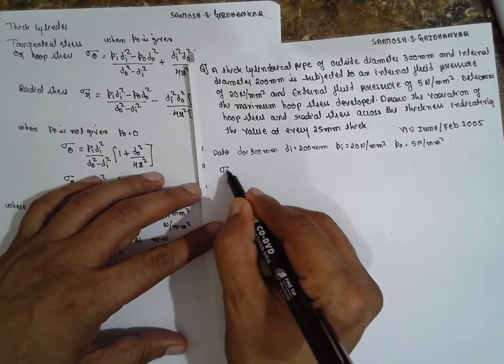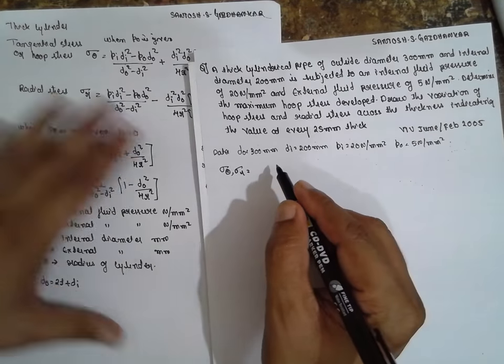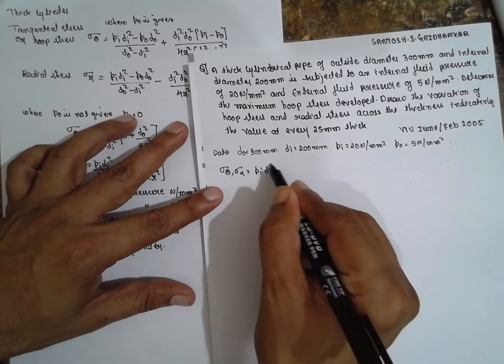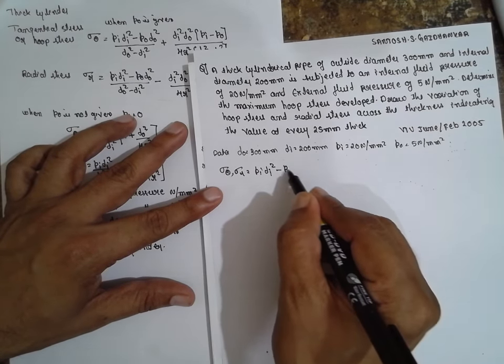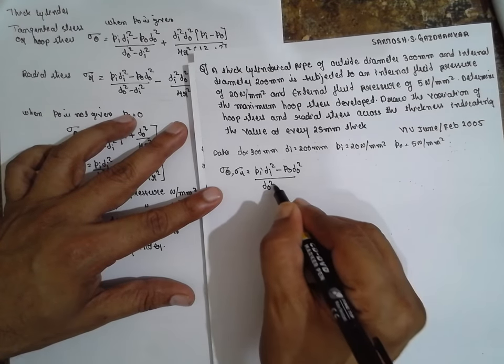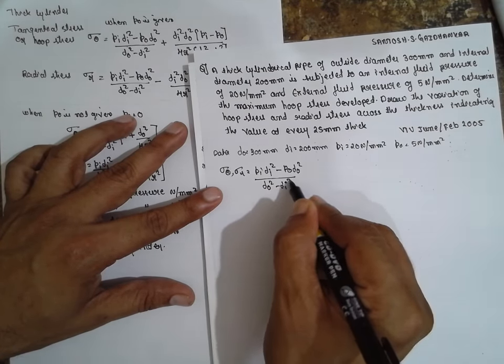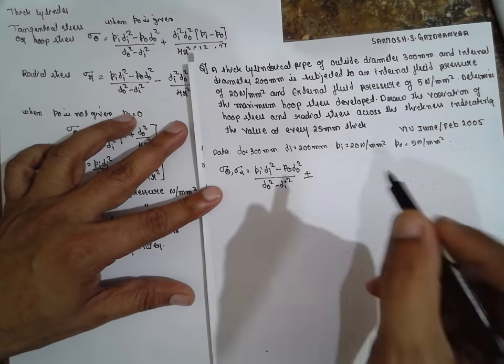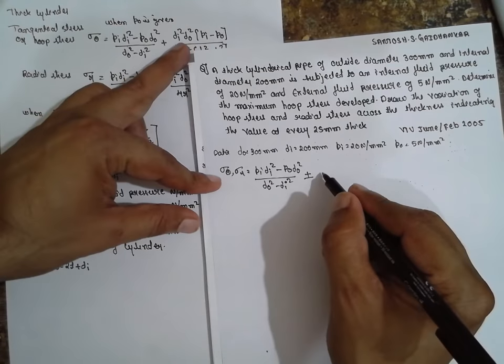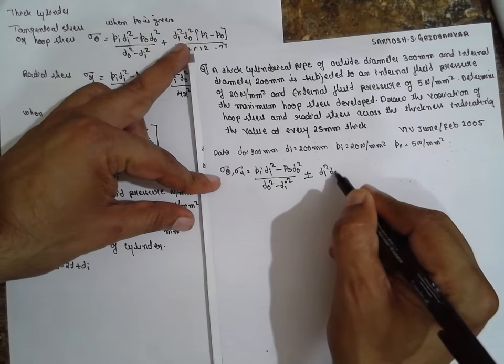I will write directly here. Sigma theta, sigma r is nothing but I will write this formula directly: Pᵢ Dᵢ square minus P₀ D₀ square divided by D₀ square minus Dᵢ square, plus or minus Dᵢ square D₀ square.